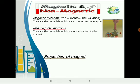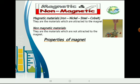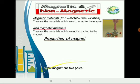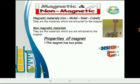What are the properties of the magnet? Number 1: the magnet has two poles. As we can see, it has a north pole and a south pole. The north pole's color is red, and the south pole's color is blue.